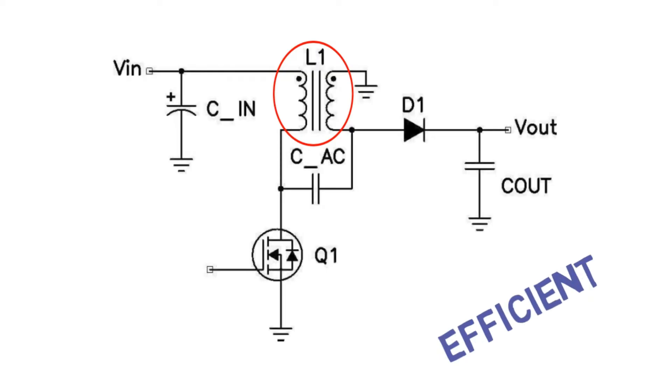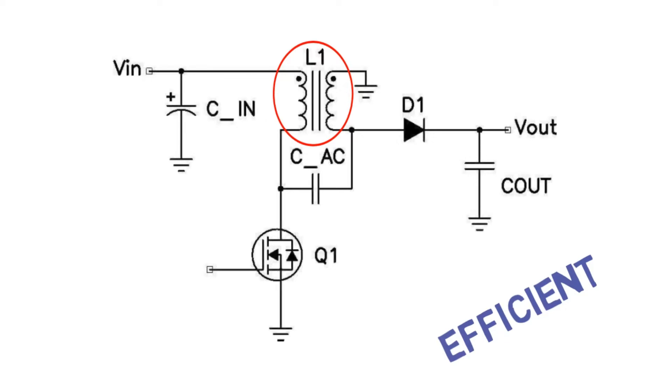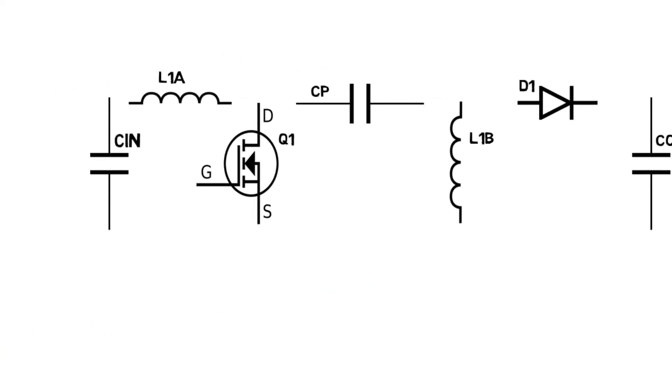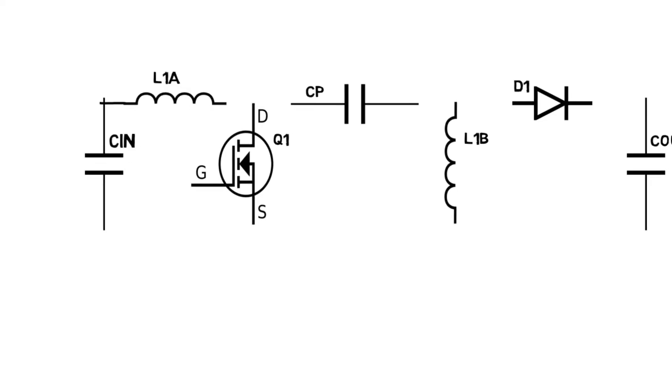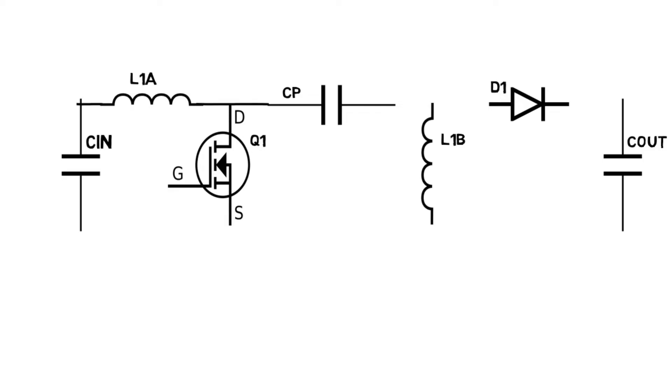The input capacitor is connected to one terminal of L1a. Another terminal of L1a is connected to drain of Q1, if it is a MOSFET. The same terminal is connected to capacitor CP. Second terminal of CP is connected to L1b.